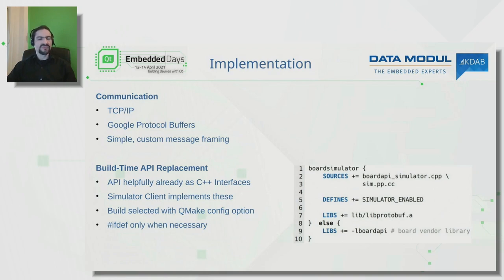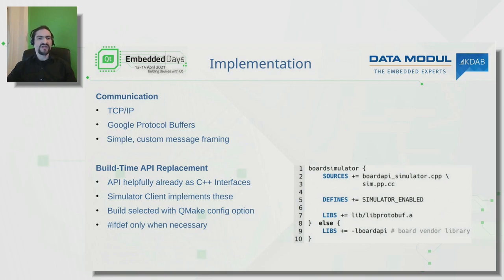In most cases this is a direct drop-in replacement. The API is defined as C++ interfaces, so our implementation has the same interface signature and derives from the same interface classes — all code using the interfaces is compatible with either implementation. In very few cases we need preprocessor ifdefs for conditional code depending on whether we're using the simulator or the hardware backend.